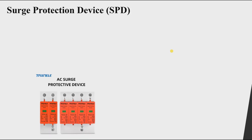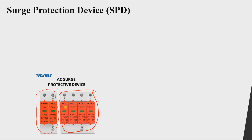The devices you can see here — this one and this one — both of these are surge protection devices. What do they do, and why do we need them? In the single phase system, as you can see, we have line and neutral.